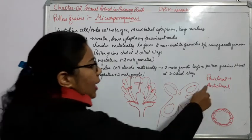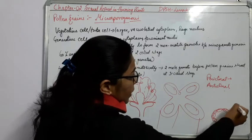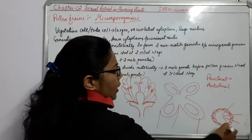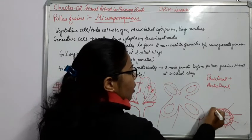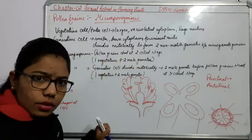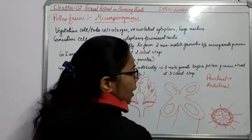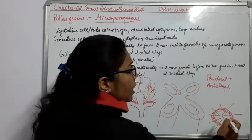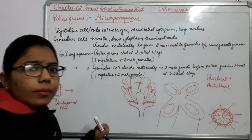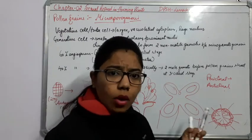In anticlinal division, the number of cells is also increasing. From the periclinal division we understood that there will be an increase of layers. Here in the anticlinal division, just at 90 degrees, it is increasing the number of cells also. This is our objective — we have to increase the number of cells.